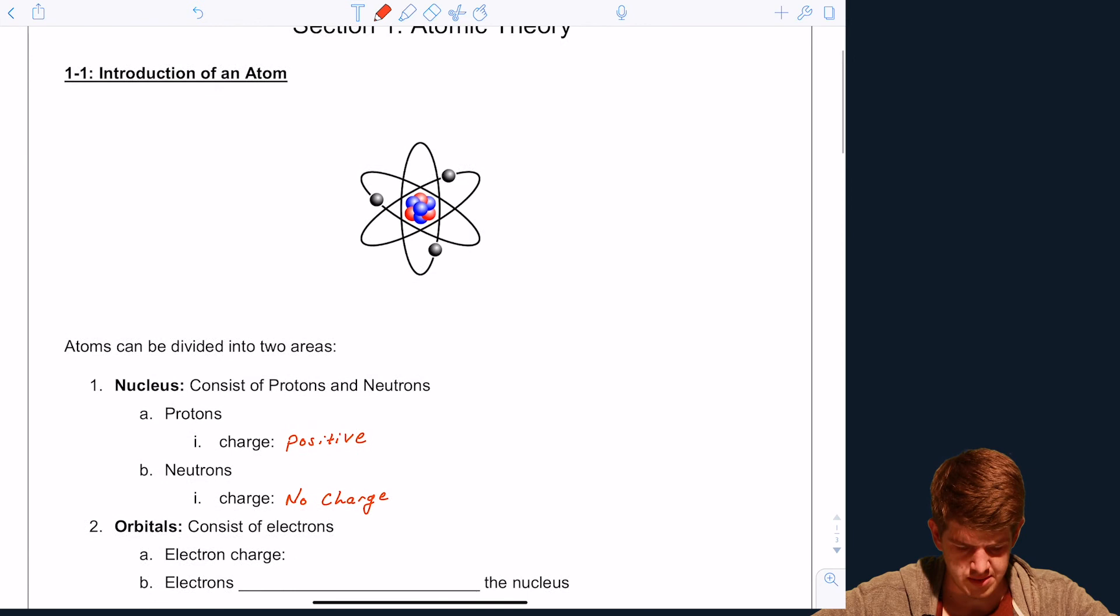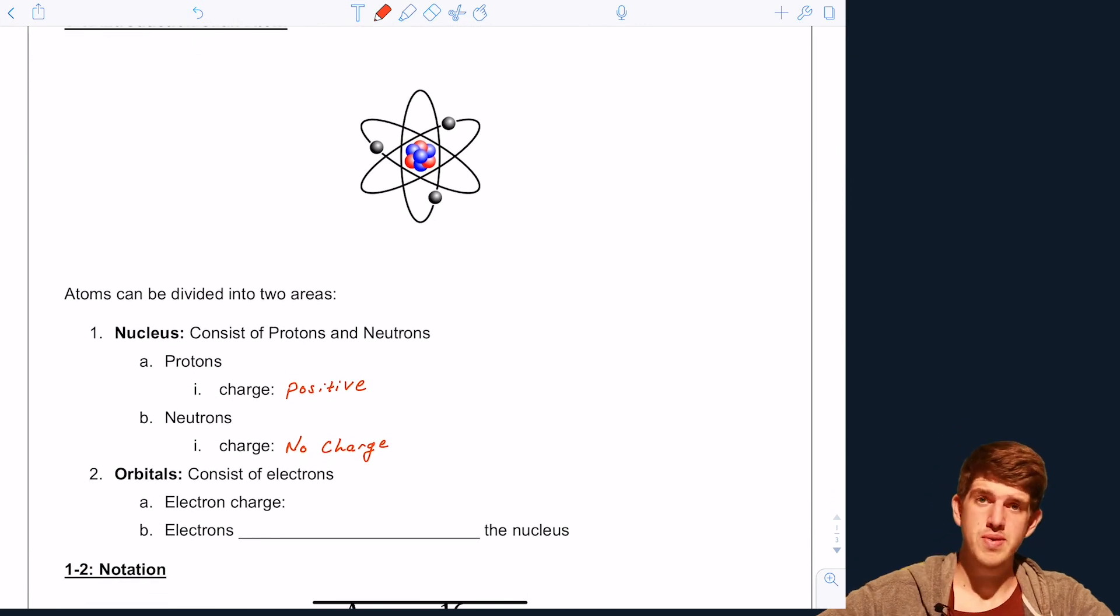But now let's talk about the orbitals. So the orbitals consist of electrons, and electrons are negatively charged. And with this blank here, you might think that this is going to say electrons orbit the nucleus, but that's going to be a major part of section two of this entire video series.